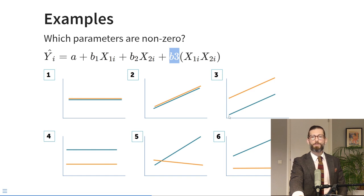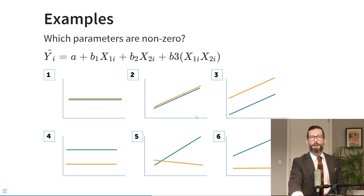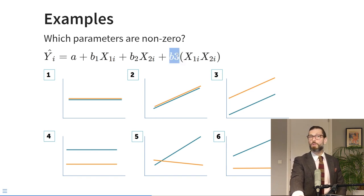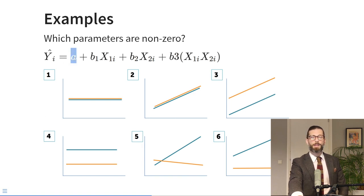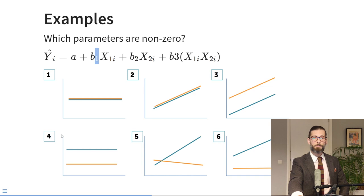In figure three, one group has an intercept at zero but the other group has a higher intercept, so the effect of the dummy variable is positive and non-zero. Both groups have a positive effect of the continuous predictor x2, so B2 is a positive number, and the two lines are parallel with the same slope, so the interaction B3 is zero. In figure four, the orange group has a positive non-zero intercept, and the other group has an even higher intercept, so B1 is also positive and non-zero. But both have flat and parallel effects of x2, so the effect of x2 is zero and the interaction term is zero.